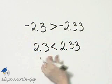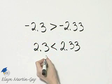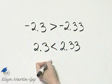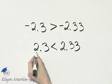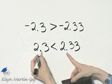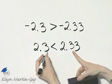Now you're comparing positive numbers and you can compare decimal place by decimal place. So 2 and 2, those are equal. Decimal point 3 and 3, those are equal.